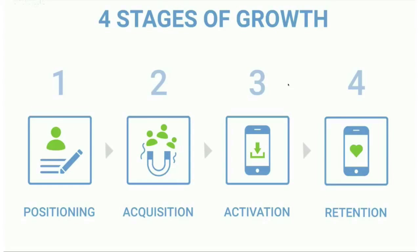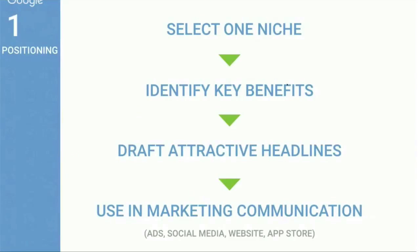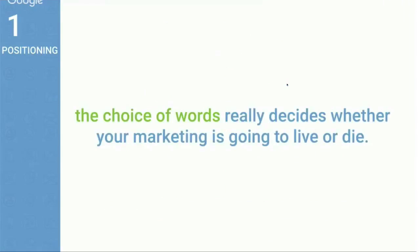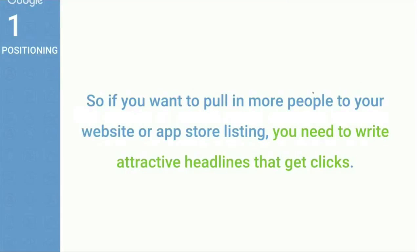This is summarized in four stages: positioning, acquisition, activation, and retention — the four stages of growth every successful app and business goes through. Positioning has four steps: identify a niche, identify key user benefits, draft attractive headlines, and use them in your marketing communications. The choice of words really decides whether your marketing lives or dies.